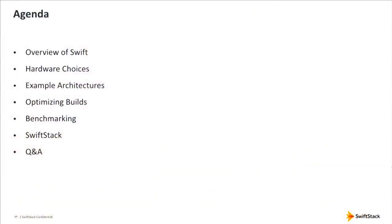We're going to talk today about the overview of Swift, making sure we set the table since there are people in the room who know a lot about Swift and others who may not be as familiar. Then we'll go into the decision tree for making choices about hardware for Swift. Eric is going to talk about reference architectures we've used as building blocks for SwiftStack deployments. Then I'll talk about optimizing the builds, benchmarking, and finally I'll plug SwiftStack a little bit — what we do for Swift and how we make it easier to deploy and manage.